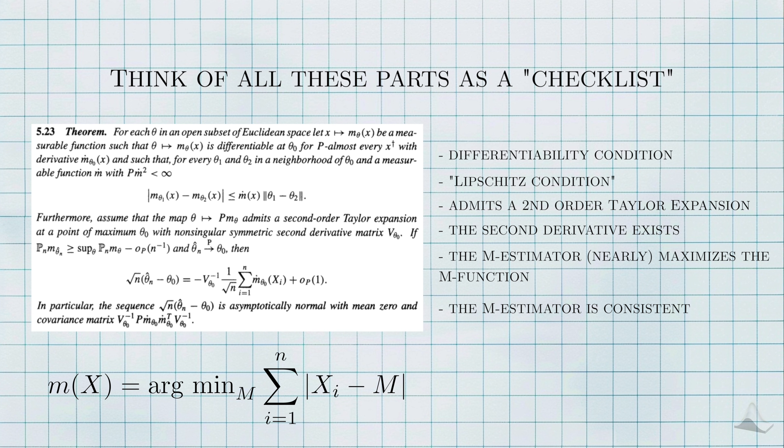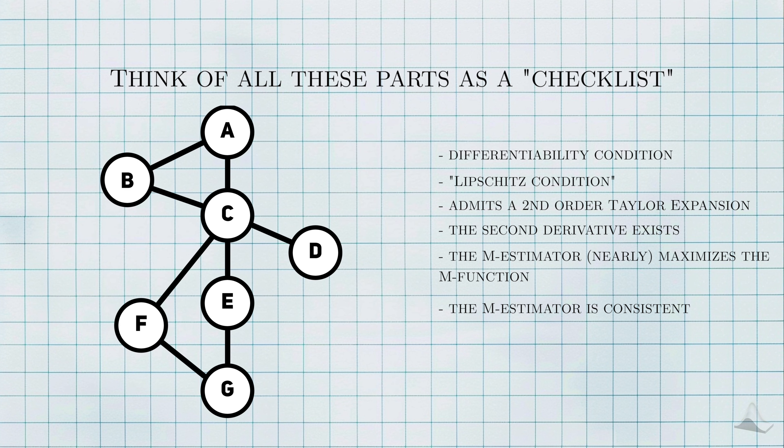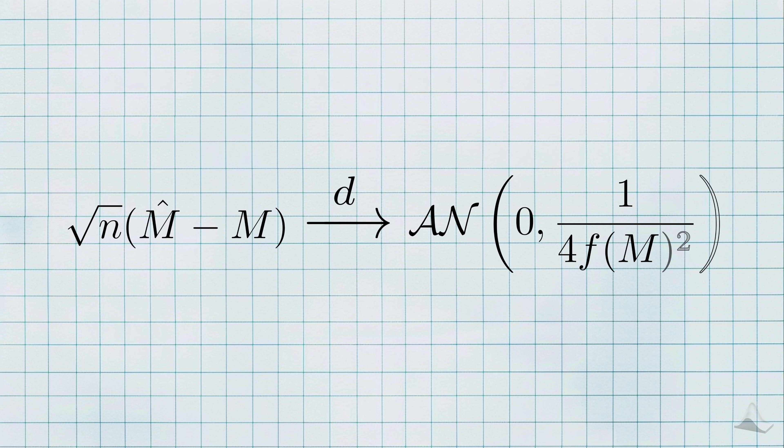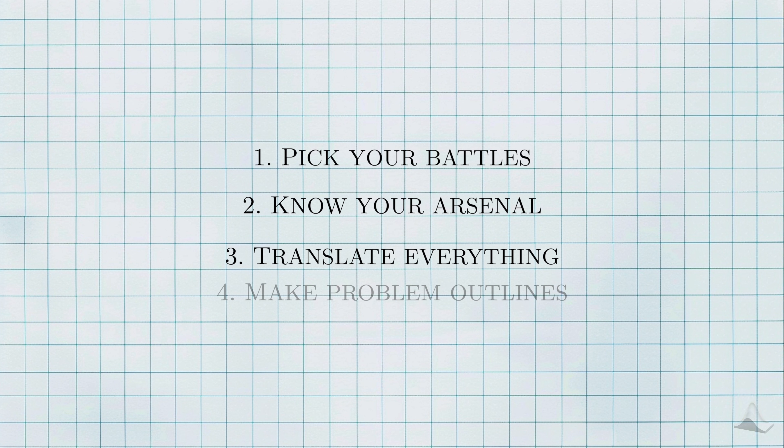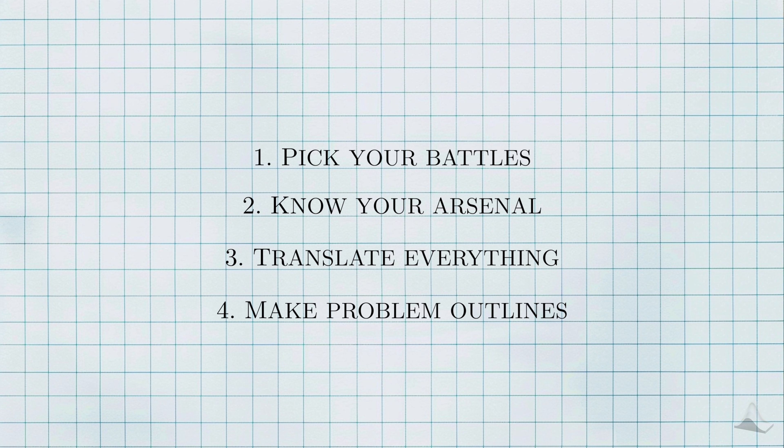You can think of all of these conditions and assumptions as part of a checklist. In writing your answer for the exam, you want to demonstrate that you can check off that each of these conditions or assumptions are met. In making your problem outlined for a problem like this, you would take each of the parts and figure out what actions, theorems, and math you need to prove these different conditions. For the curious viewers, you can use this theorem to show that the centered, scaled version of the m estimator for the median has an asymptotic normal distribution with mean zero and variance equal to this expression.